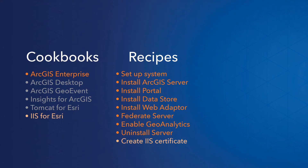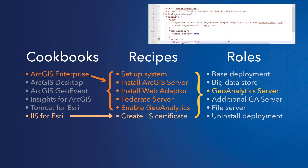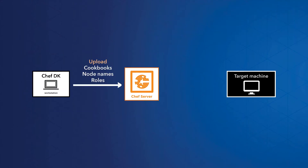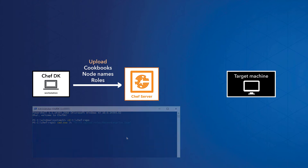The ArcGIS Enterprise cookbook has dozens of recipes for tasks such as installing ArcGIS Server or authorizing software. Our Chef resources take another step with roles files — JSON files that specify which recipes to run in order to install software. To begin, you use a workstation to send your server the roles, cookbooks, and ingredients it needs. That happens via the Chef Development Kit, or Chef DK, which runs in your workstation as a PowerShell module.